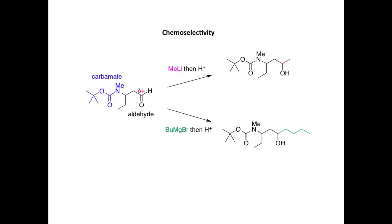We'll now move on and look at a chemoselective transformation. In this example we have a starting material that contains two different carbonyl functional groups: an aldehyde and a carbamate functional group. On reaction with methyllithium, you'll notice that we only get reaction at the aldehyde group, not the carbamate. The methyllithium reacts with the aldehyde group and after protonation we form this alcohol derived from nucleophilic addition, with the methyl group introduced. We get a similar result with butylmagnesium bromide — again, reaction solely at the aldehyde carbonyl, forming this alcohol with the new butyl side chain.